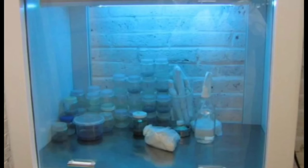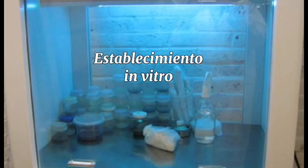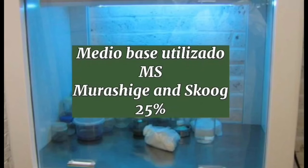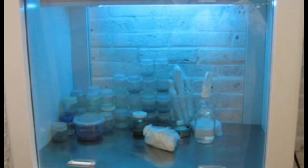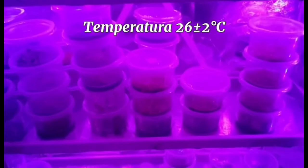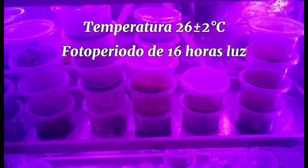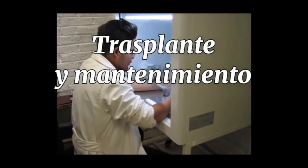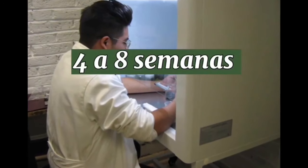La siembra y el trasplante se realizaron en condiciones de asepsia en una campana de flujo laminar. El medio base utilizado fue el MS, Murashige & Skoog, al 25%. Las condiciones de incubación fueron de 26 ± 2 grados centígrados de temperatura, fotoperiodo de 16 horas luz, con una intensidad lumínica de 1,900 a 2,300 luxes provenientes de lámparas LED, a una distancia del material de 30 centímetros. El material se mantuvo con trasplantes periódicos de 4 a 8 semanas según la especie.